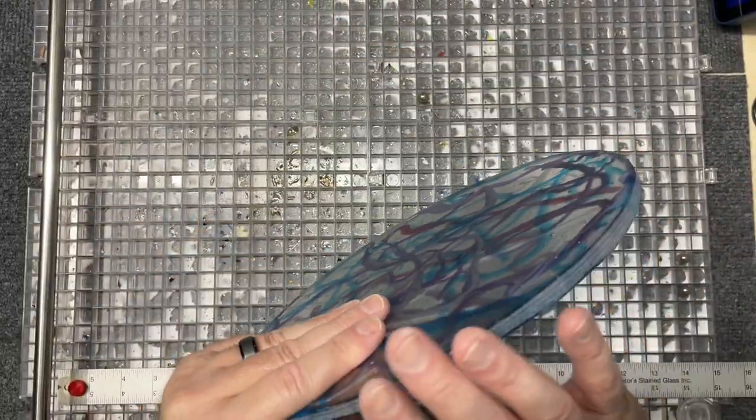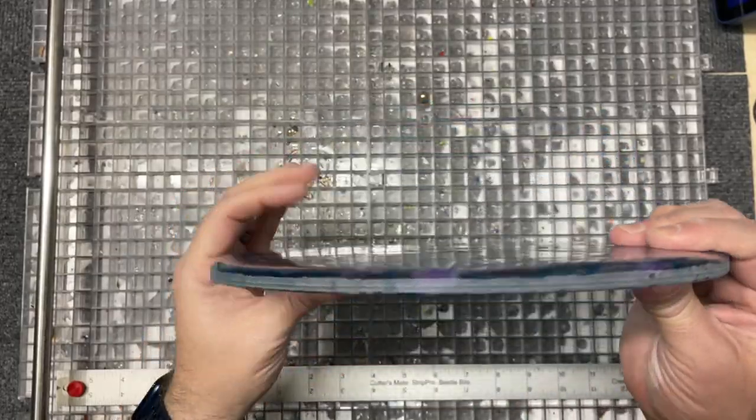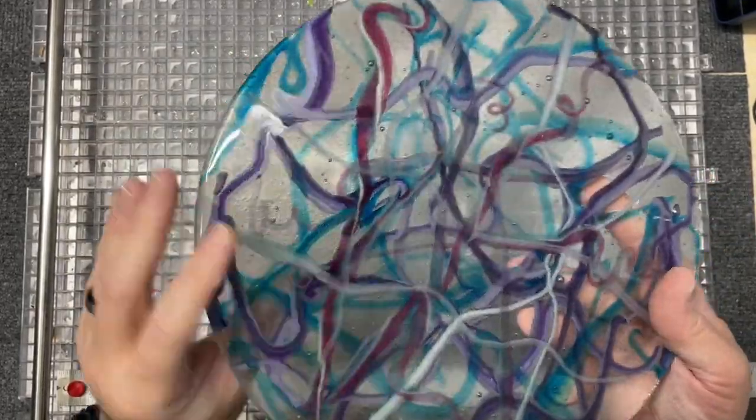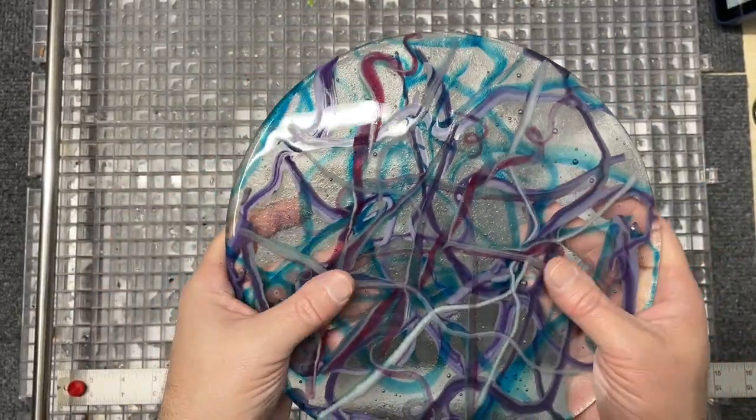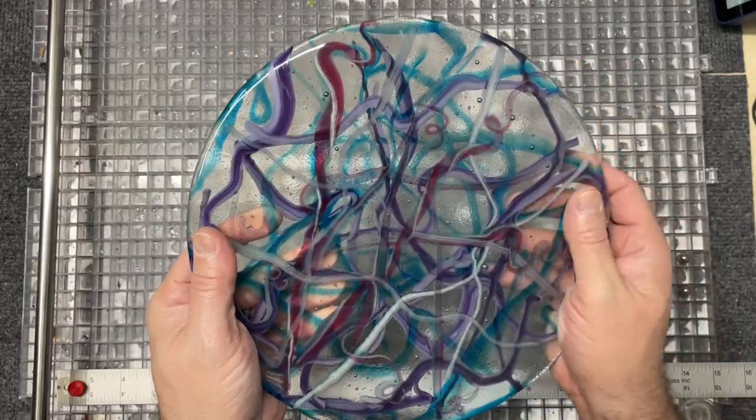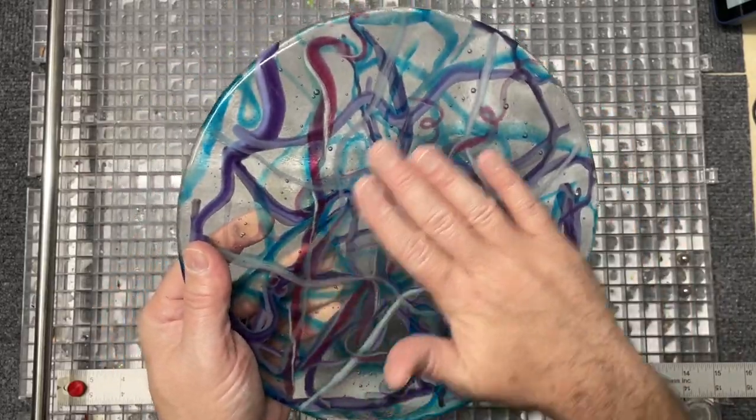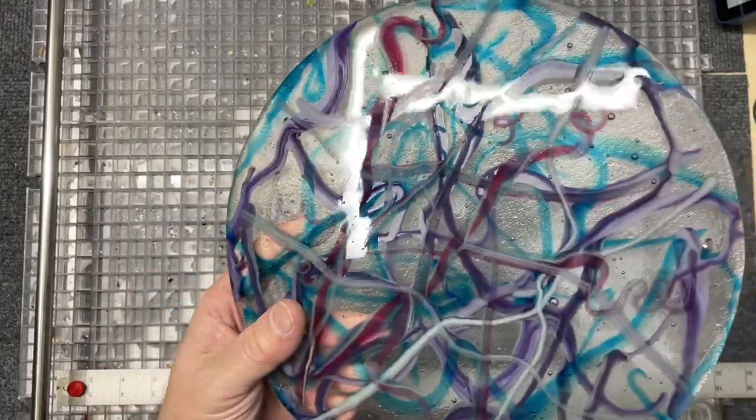It's really thick so I did take it to my grinder and just cleaned up the edge a little bit all around, and I am going to put it back in for another fuse just to let it thin out, spread out a little bit more and get to its kind of final size before I decide how I'm going to slump this piece.